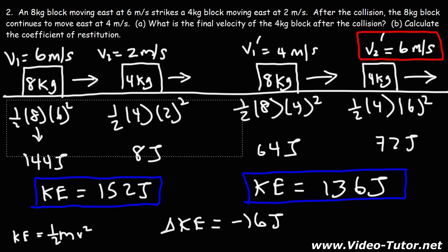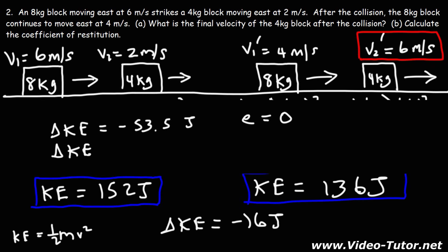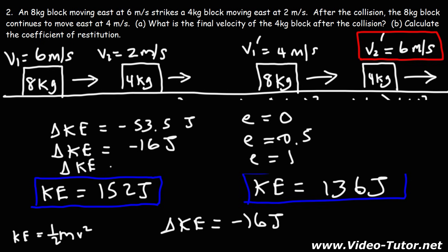If you follow the same procedure for the first problem, the loss in kinetic energy is about 53.5 joules when the coefficient of restitution is 0. For this problem, there was only a 16-joule energy loss with a coefficient of restitution of 0.5. And when it's 1, we have a perfectly elastic collision with no loss of kinetic energy. So generally speaking, as the coefficient of restitution increases from 0 to 1, the loss of kinetic energy decreases — as E goes up to 1, the energy loss goes down to 0.